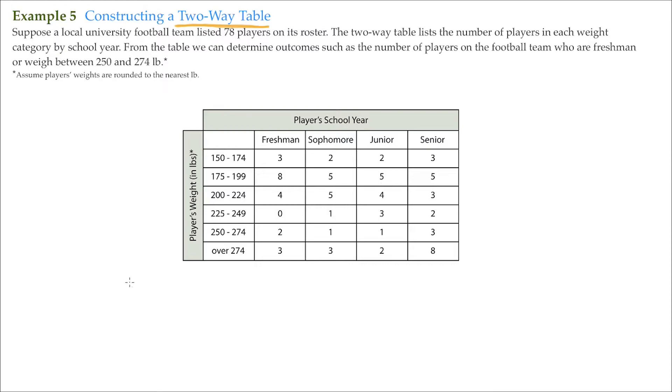So for this one, suppose a local university football team listed 78 players on its roster. The two-way table lists the number of players in each weight category by school year. From the table, we can determine outcomes such as the number of players on the football team who are freshmen or weigh between 250 and 274 pounds.